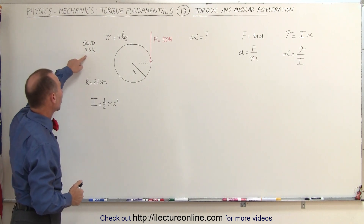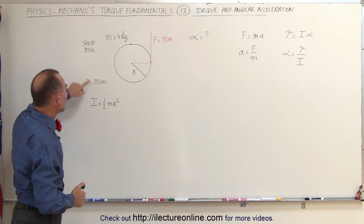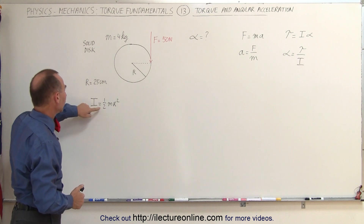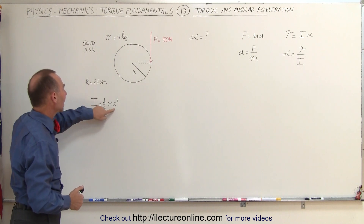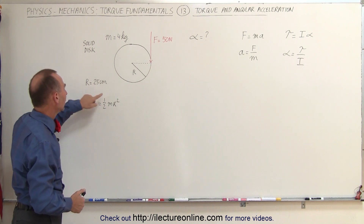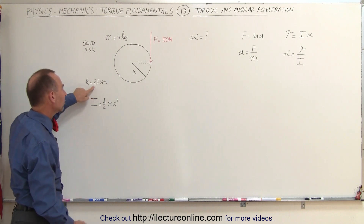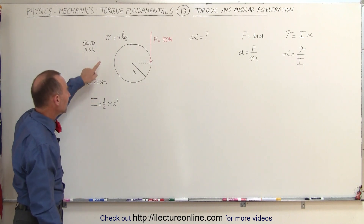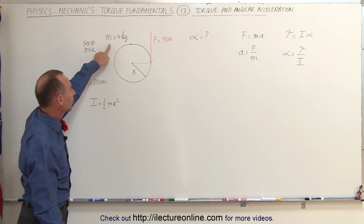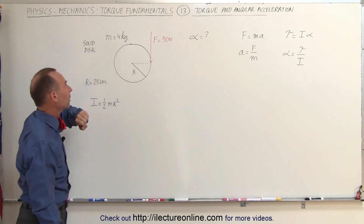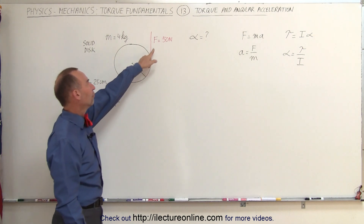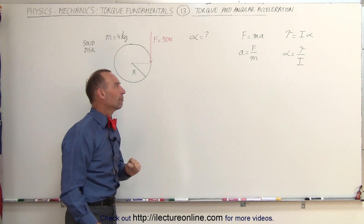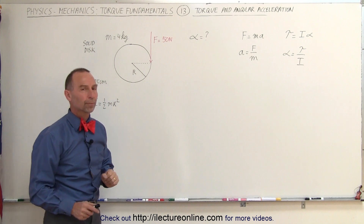Remember that with a solid disk the moment of inertia is one-half m times r squared. Let's say the radius is 25 centimeters, the mass of this disk is 4 kilograms, and the force is equal to 50 Newtons.